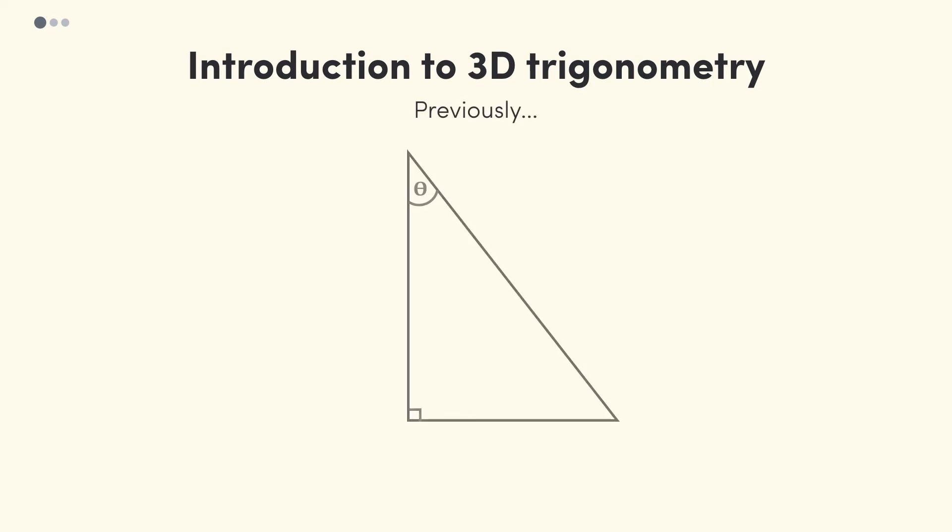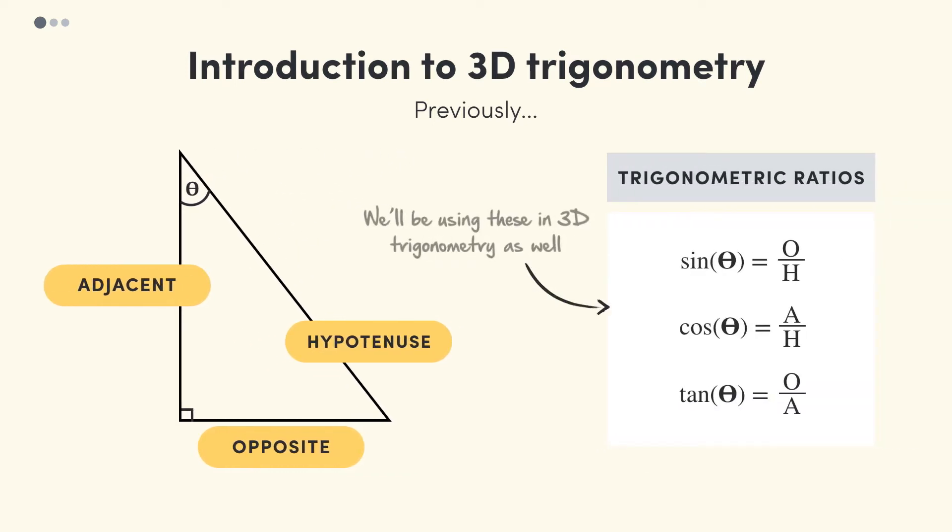Previously, we've dealt with triangles and Trigonometry in two settings. 3D Trigonometry isn't too different from this. We'll be using similar techniques and the same Trigonometric equations to solve for some unknown variable, whether it's a side length or an angle size.